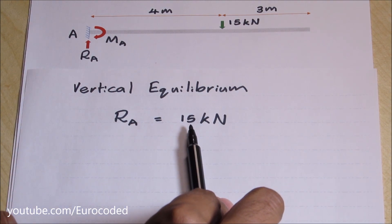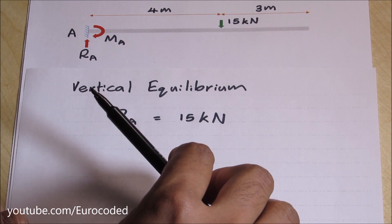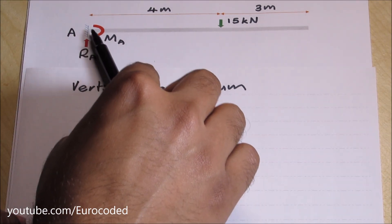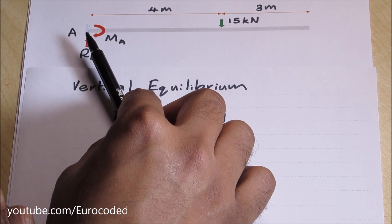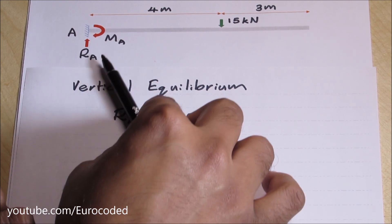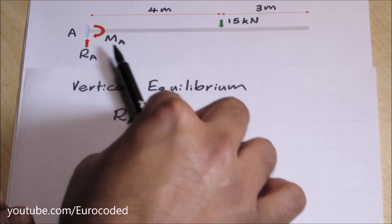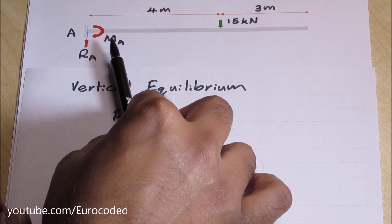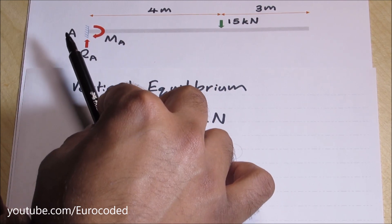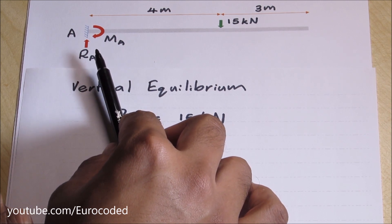Now on to the moment equilibrium. Moment equilibrium is best done by taking moments about A, point A the support. It is best to do it at A because the unknown RA would have no effect on the calculation of MA. You can see that the lever arm is 0 for RA when you're taking moments about point A. Hence RA has 0 moment about A.